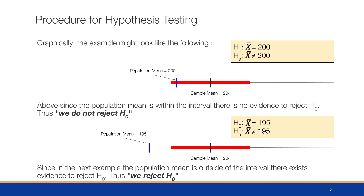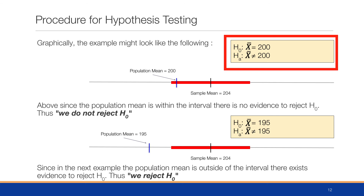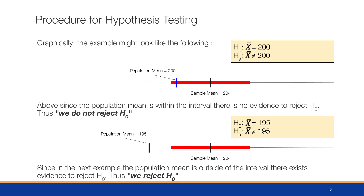Graphically, with H₀: x̄ = 200 and Hₐ: x̄ ≠ 200, and a population mean of 200 at the edge of the red confidence interval — since the population mean is within the interval, there is no evidence to reject H₀, so we do not reject H₀. If we change the null hypothesis so that x̄ = 195, that technically moves the population mean outside the boundary of the confidence interval, and in this example the population mean falling outside means there exists evidence to reject H₀, and thus we reject the null hypothesis.